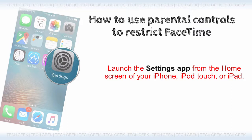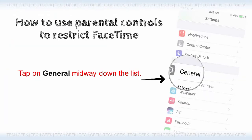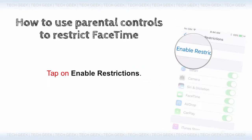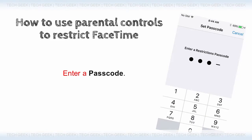How to use parental controls to restrict FaceTime. Launch the Settings app from the home screen of your iPhone, iPod Touch, or iPad. Tap on General midway down the list. Tap on Restrictions midway down the list. Tap on Enable Restrictions if they're not enabled already. Enter a passcode.